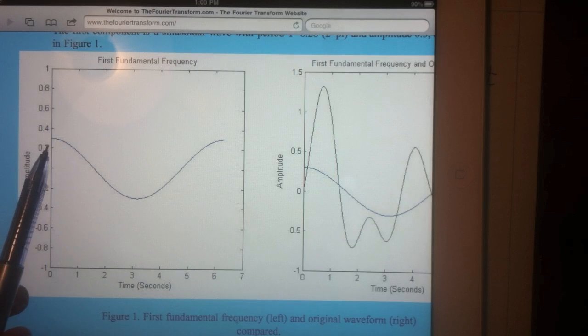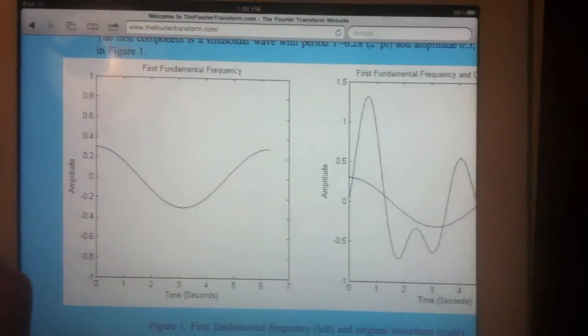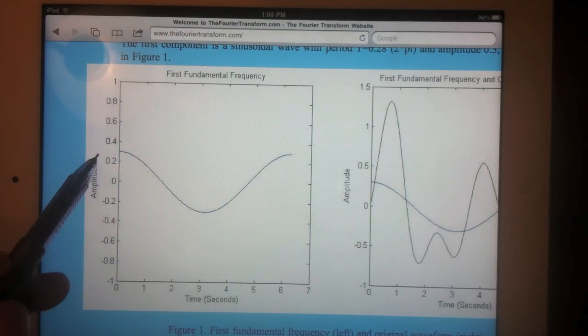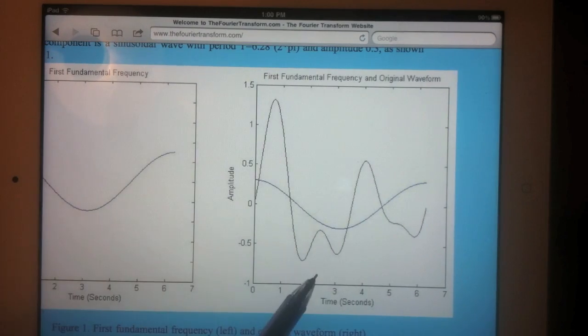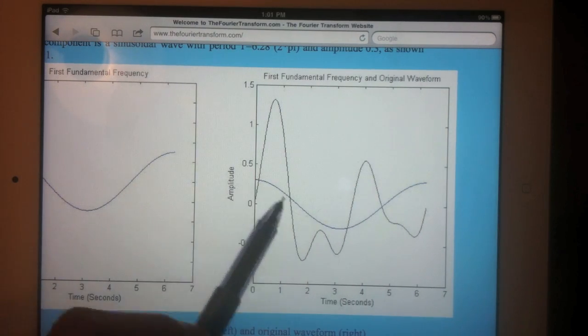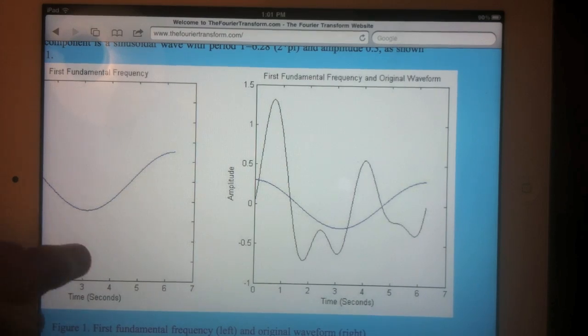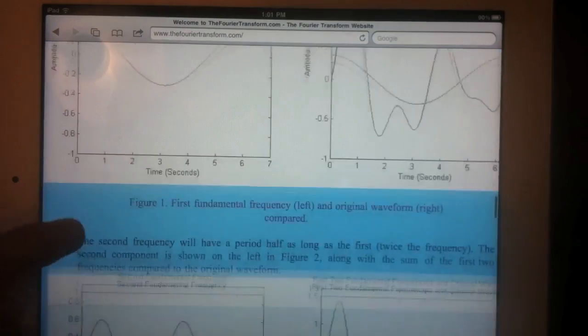And that's this cosine function right here. So it has an amplitude of 0.3. So we plot this waveform along with the first component and we get that. And it doesn't really look like it's adding up, but we'll see.